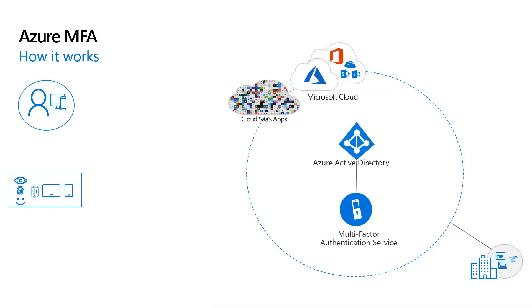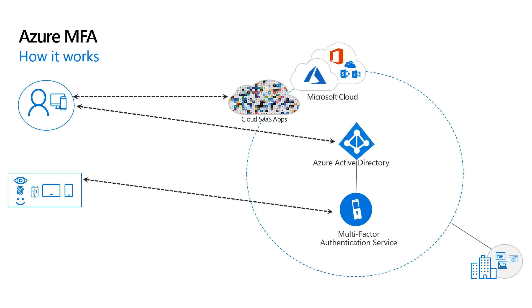Now I want to briefly talk about how Azure MFA works. In this example, we have a user who is trying to access a SaaS application that is protected by Azure MFA. First, the user tries to access the app, and because they haven't authenticated yet, they'll be redirected to Azure AD. Azure AD will then validate the user's password, either natively in the cloud or through a federated identity provider. At this point, Azure AD recognizes that MFA is required and makes a call to the multi-factor authentication service, which then challenges the user for their default MFA method. The user then completes the challenge and is redirected to the application, which then grants them access.